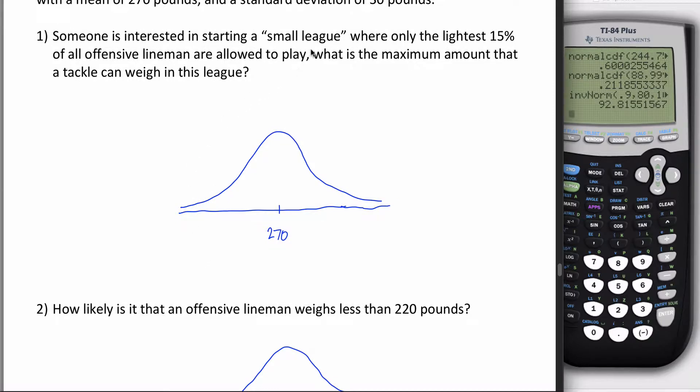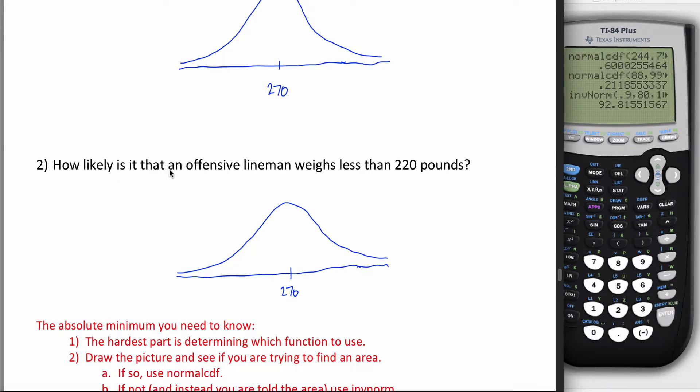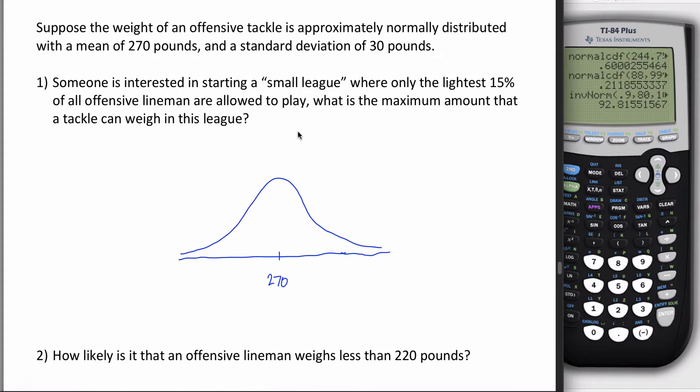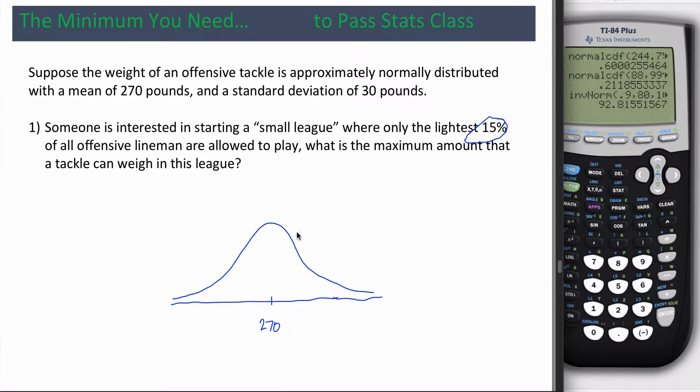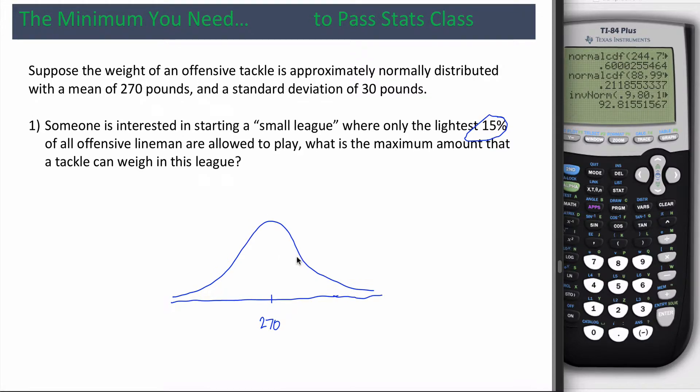One says someone's interested in starting a small league where only the lightest 15% of all offensive linemen are allowed to play. What is the maximum amount that a tackle can weigh to be in this league? In other words, what is the weight - not a percentage, not a probability. Contrast that to 'how likely is it that' - that's synonymous with 'what is the probability that,' one of our key phrases. They're giving me the bounds and asking for an area. Up here they're giving me an area and asking me to find one of the bounds.